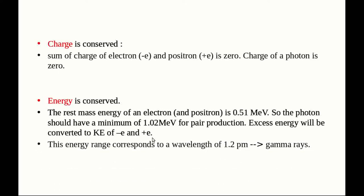This energy of 1.02 MeV corresponds to a wavelength of 1.2 picometers. Using E equals h-nu, and substituting, we get lambda equals 1.2 picometers. This is the wavelength range corresponding to the minimum pair production energy.